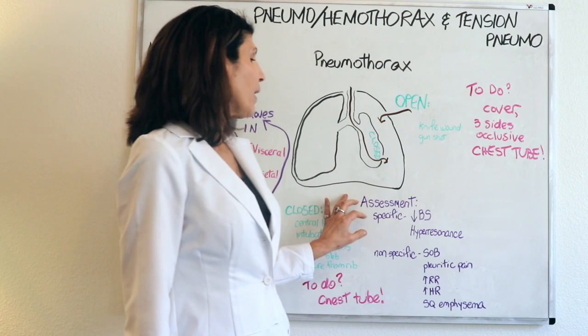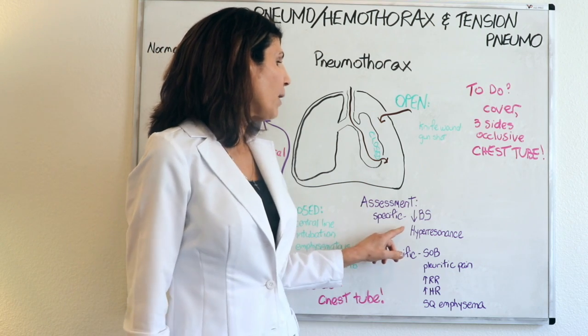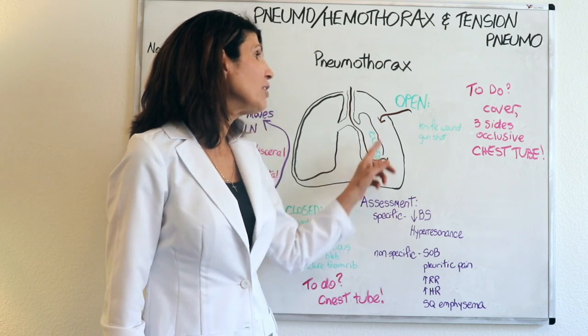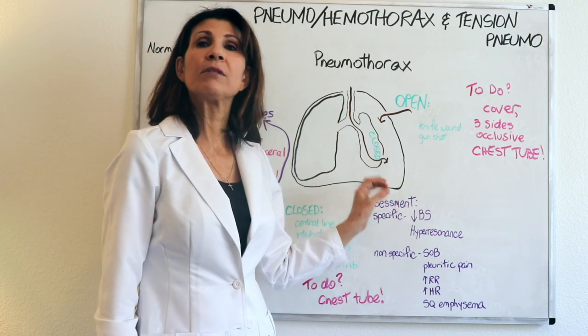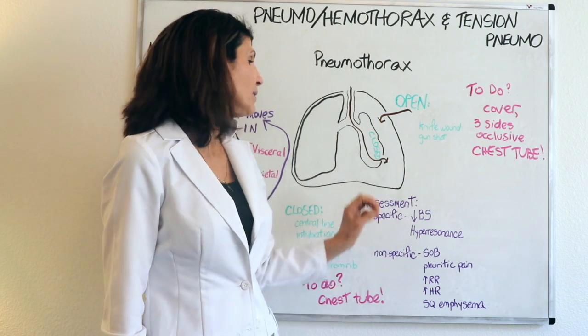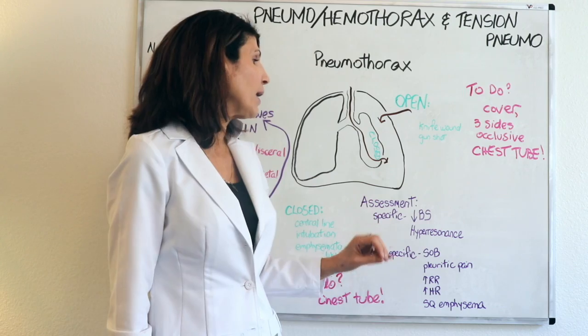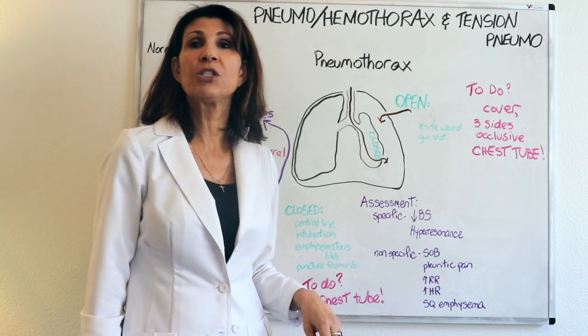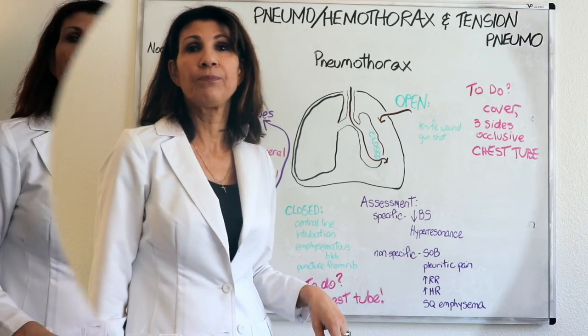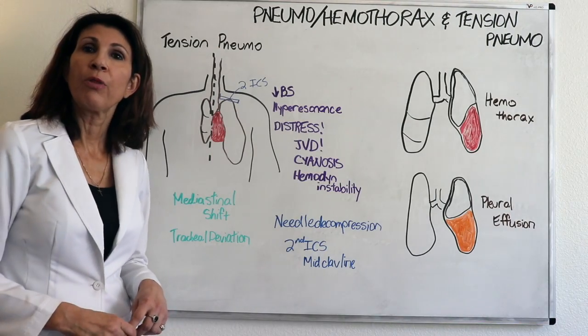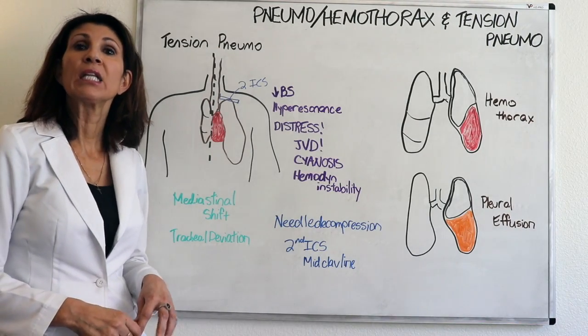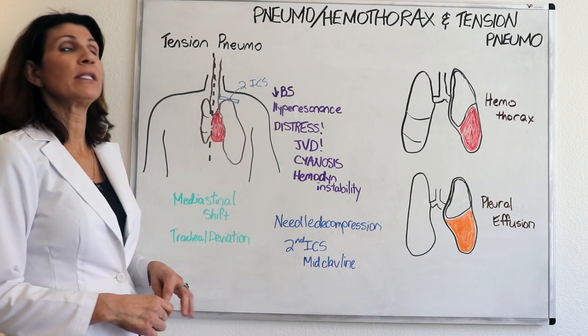Specific findings for pneumothorax include decreased breath sounds on the affected side and hyper resonance to percussion. A tension pneumothorax is a life-threatening condition.